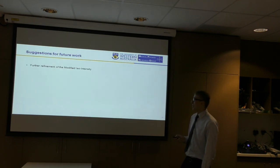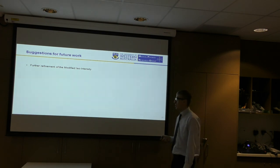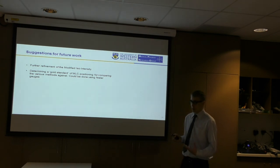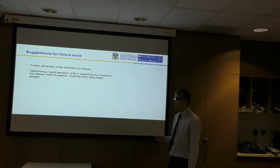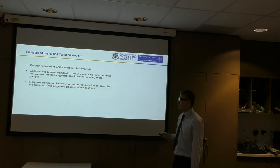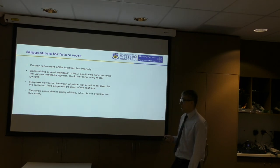Suggestions for future work. Further refinement of the modified isointensity method could be fruitful. Really need to overcome this, we don't know what the right answer is for small fields, and that could be done by determining a gold standard of MLC positioning comparison, using film gauge measurements of the actual gap widths between the MLC leaves, but that would require a correlation between the physical leaf position, as given by the radiation field edge, and the position of the leaf tips. Also, it requires some disassembly of the LINAC, which is not practical for this study. I don't think anyone here was going to let me pull the LINAC apart.